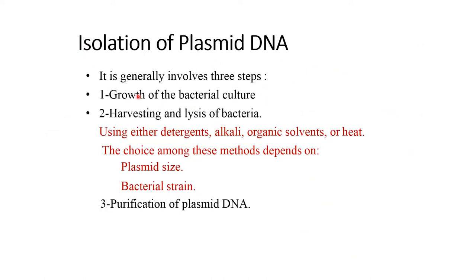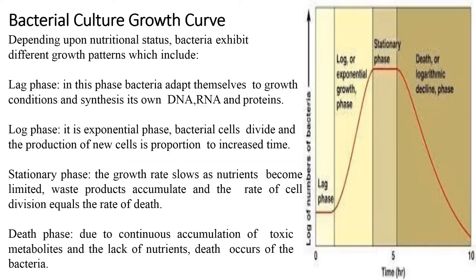Isolation of plasmid generally involves three steps: one is the growth of bacterial culture; second is harvesting and lysis of the bacterial cell using either detergent, alkali, organic solvent, or heat — the choice among these methods depends on plasmid size and bacterial strain; and the last one is the purification of plasmid DNA. Regarding bacterial culture growth, depending on nutritional status, bacteria exhibit different growth patterns which include lag phase, log phase, stationary phase, and death phase. Usually the culture in the log phase is utilized for plasmid isolation.